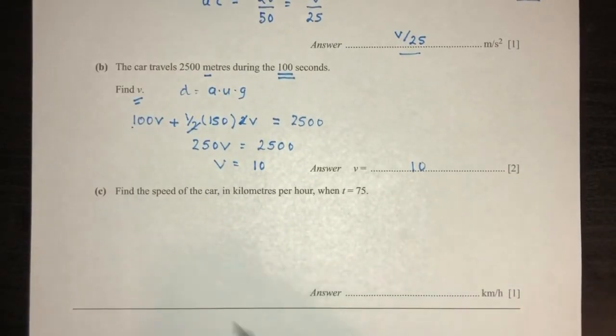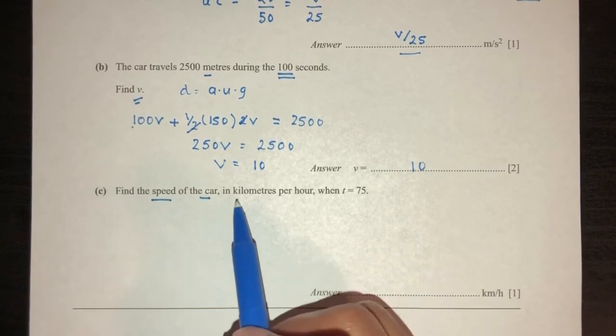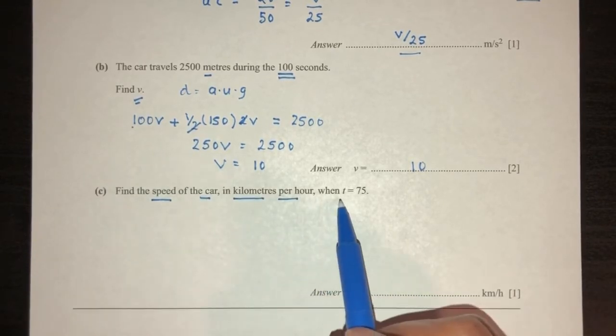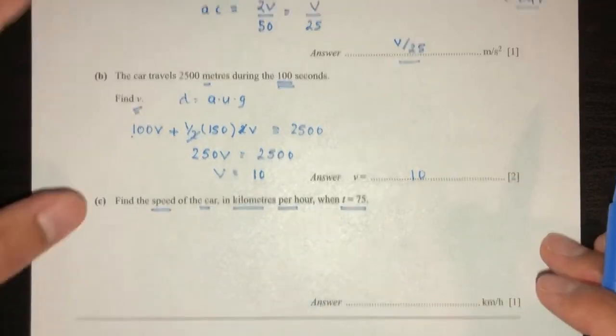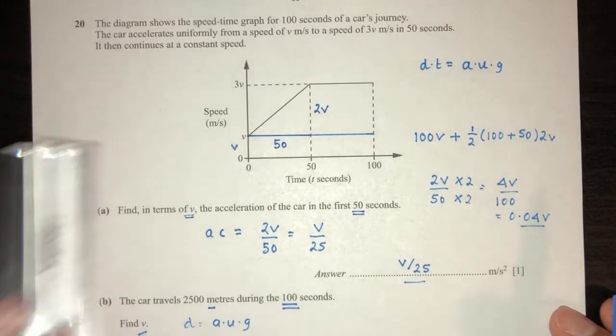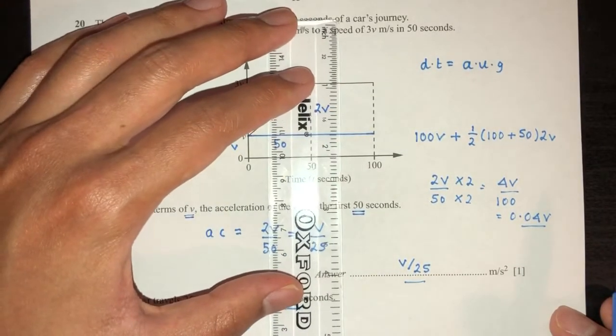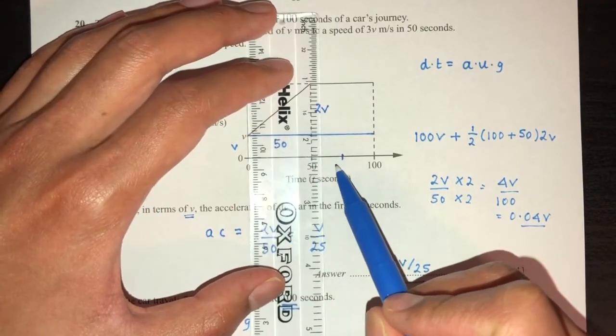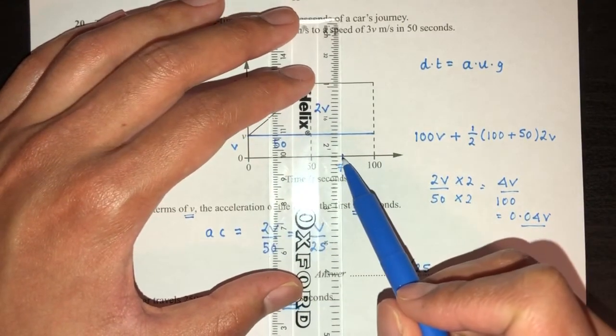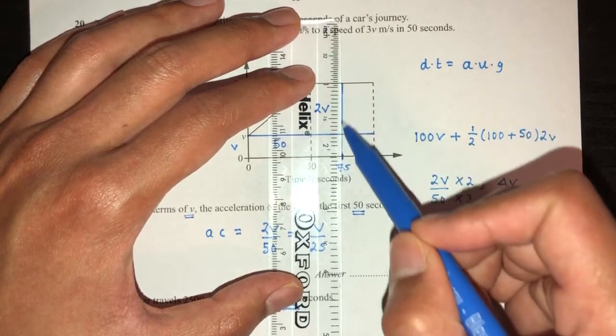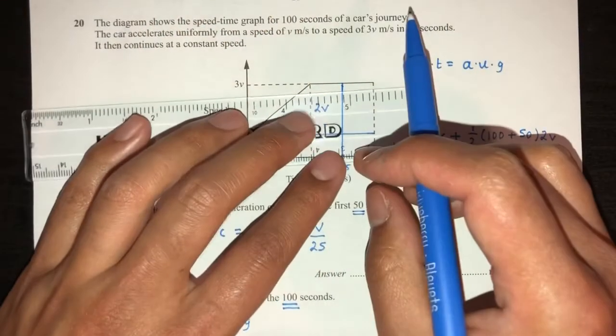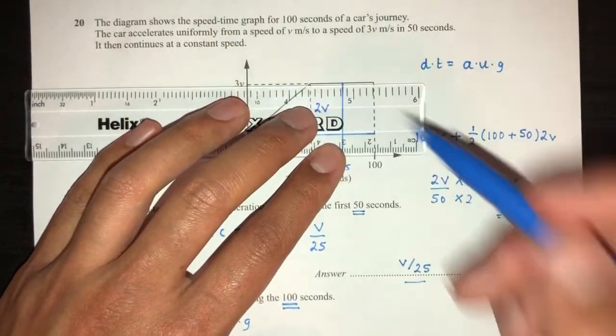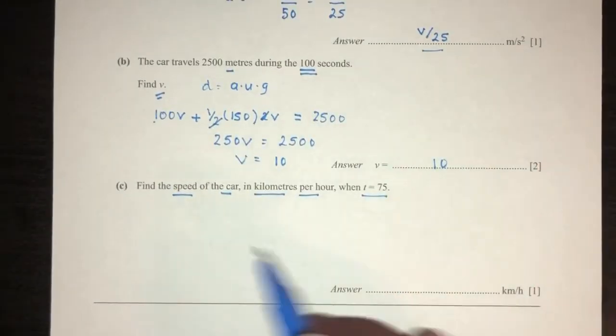Now moving on to part C. Find the speed of the car in kilometers per hour when t equals 75. So t equals 75. It will be about this value, in between 50 and 100. Now at this value, the speed was equal to, if you observe, it was equal to 3V. So what is 3V?